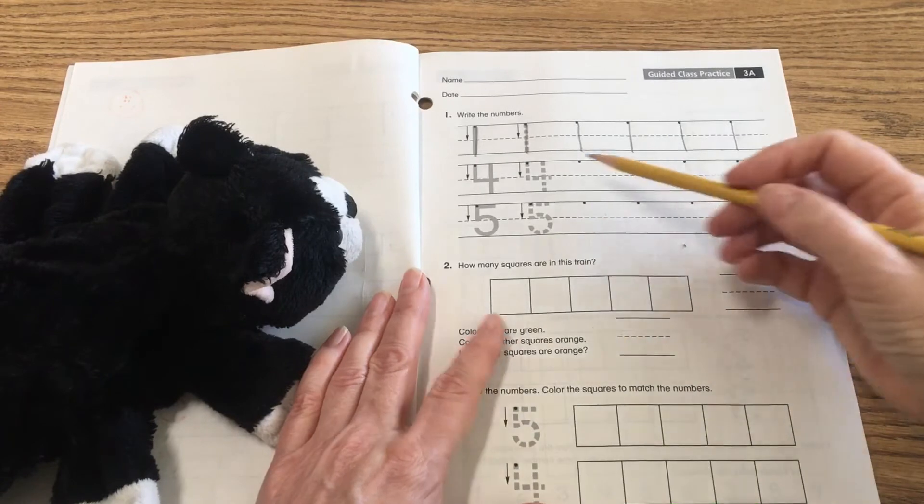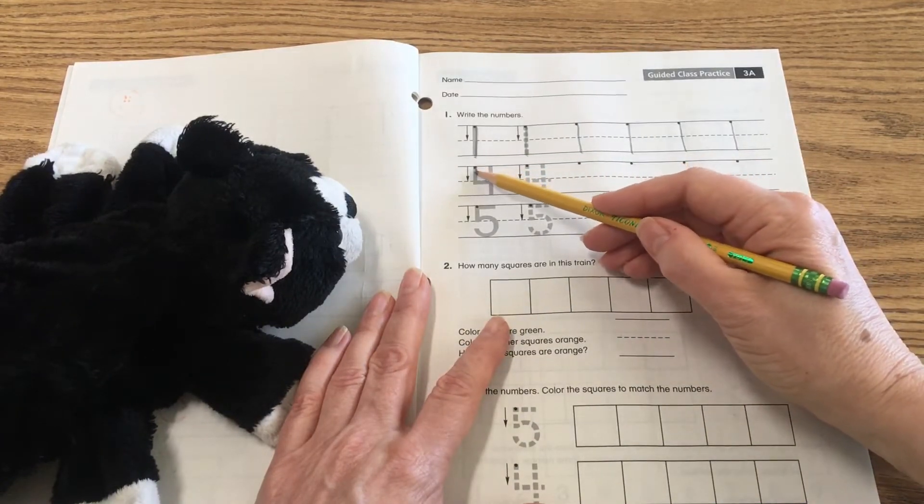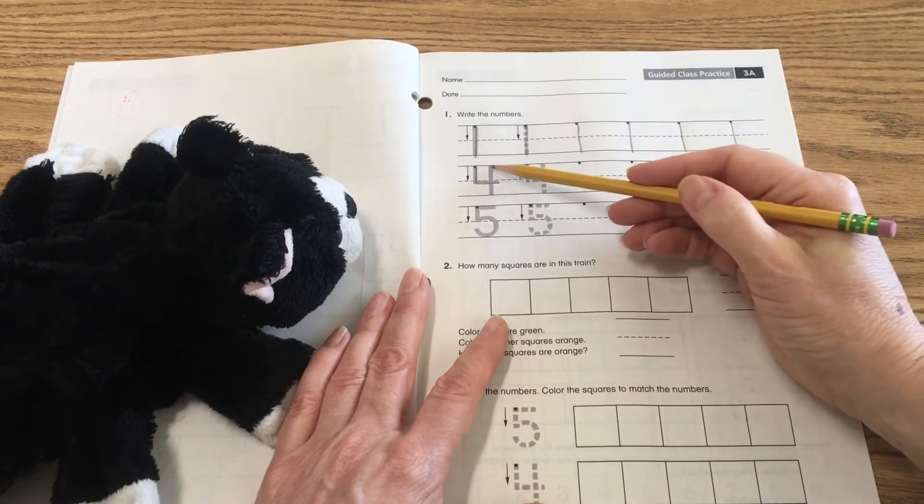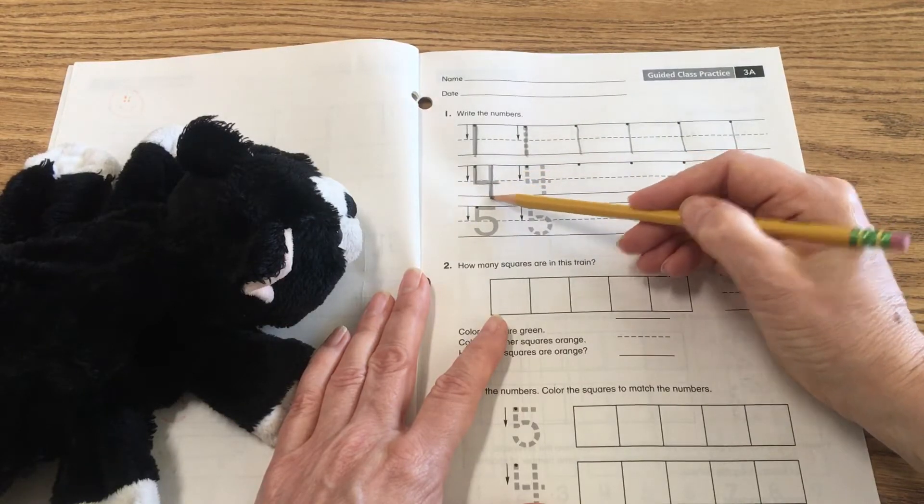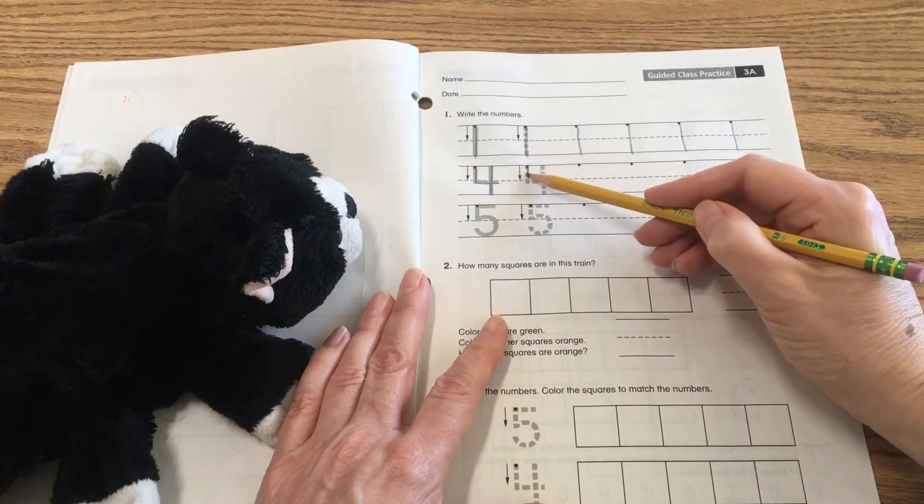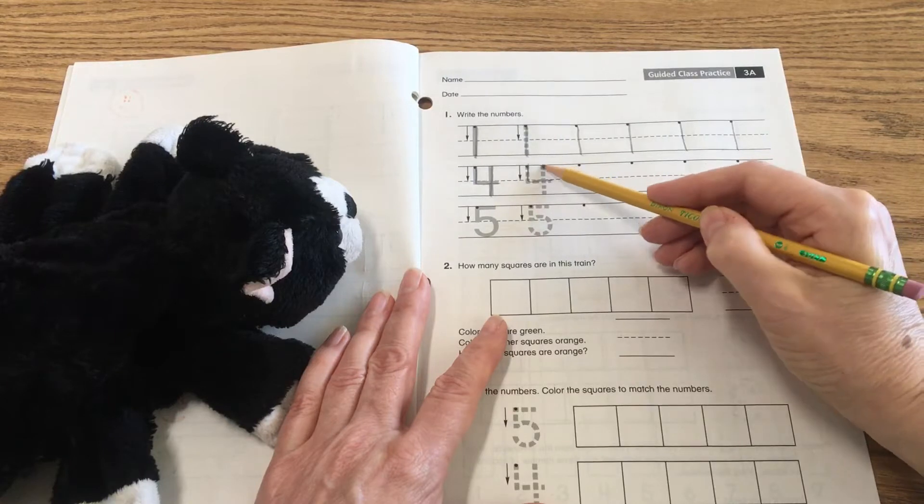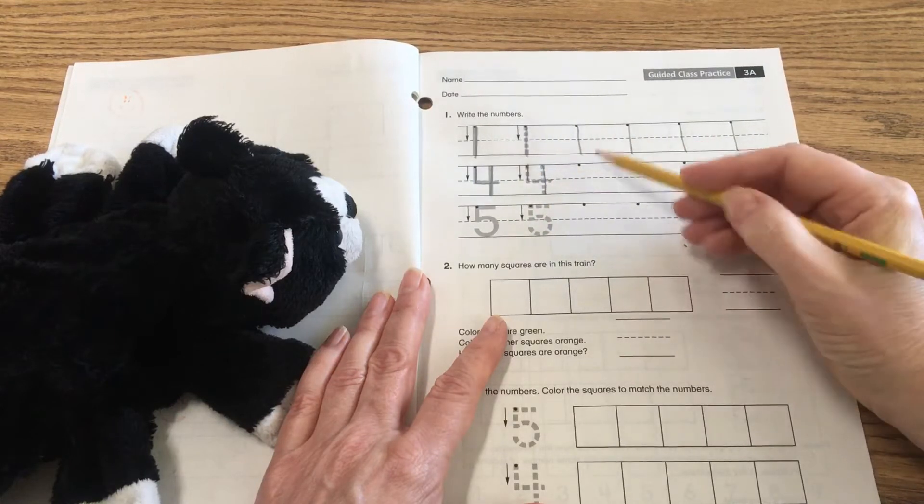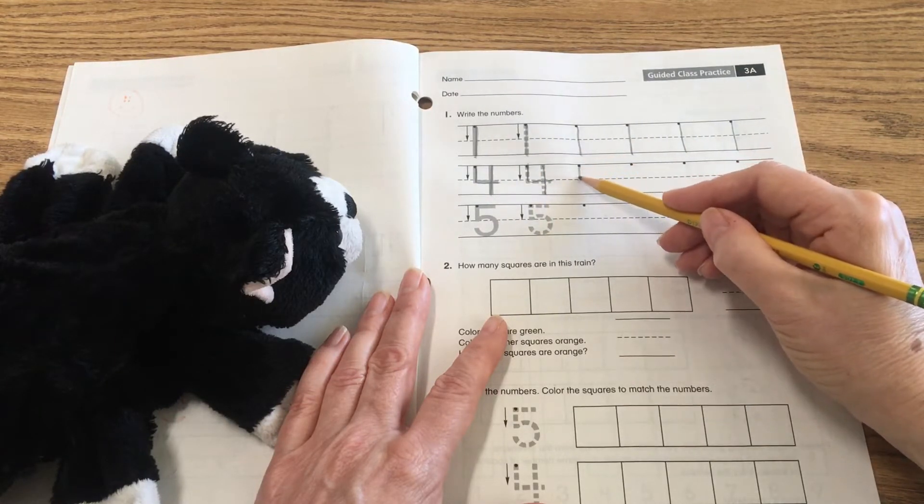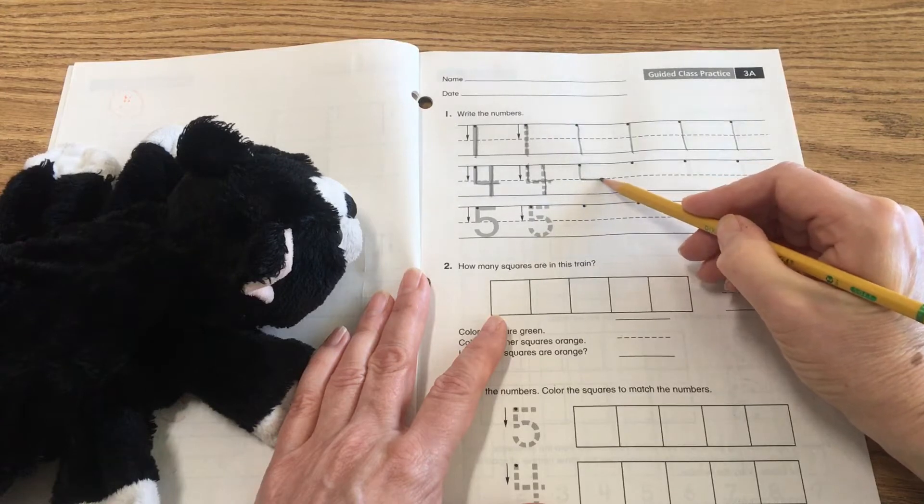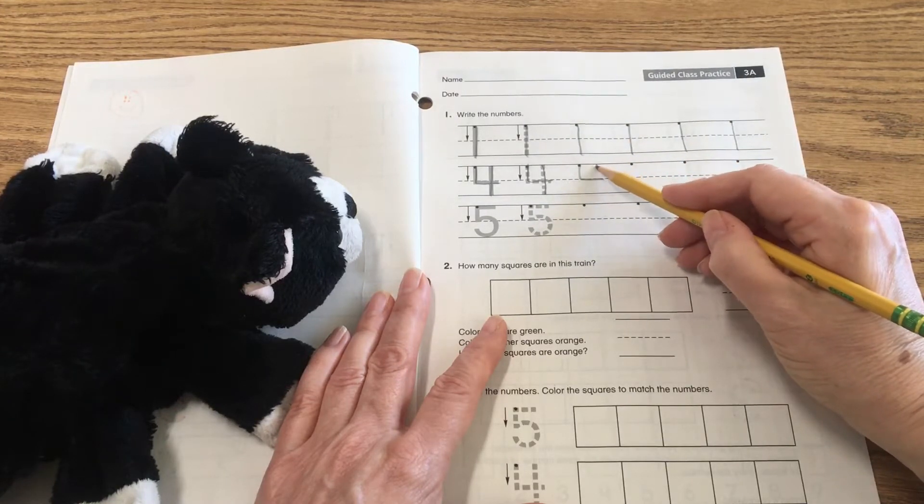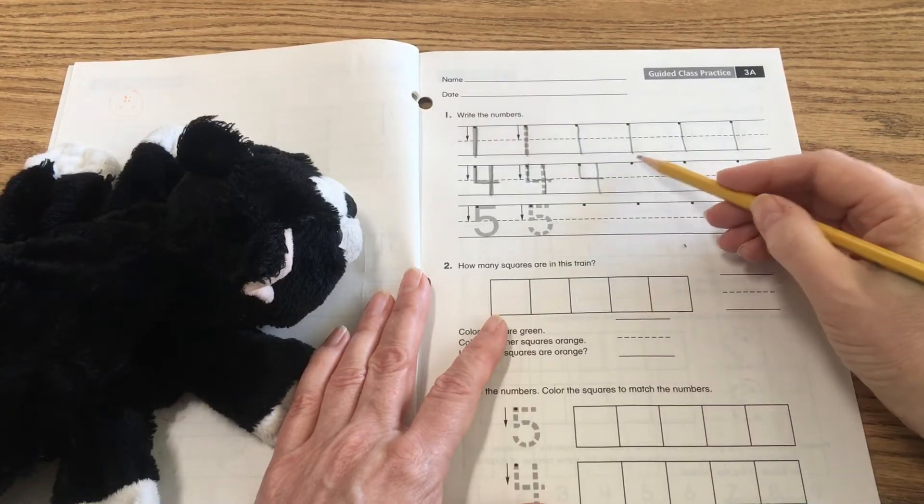Now number four. Remember you start at the dot, you go down, over, lift, and then straight down. Down, over, lift, and straight down. That's a four. Start at the dot, down, and on the dotted line, go over. Then lift, go to the top of the line, and go straight down. Four.